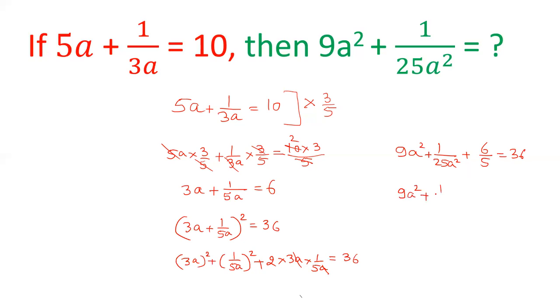So 9a square plus 1 upon 25a square equals 36 minus 6 by 5, which is 180 minus 6 upon 5, equals 174 upon 5.